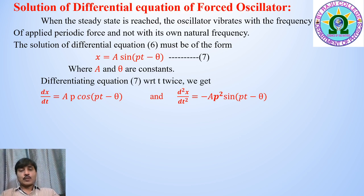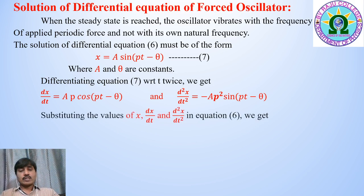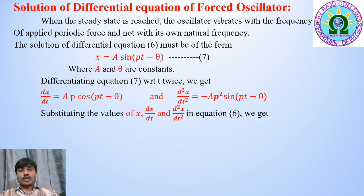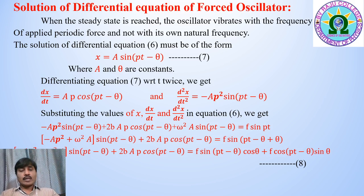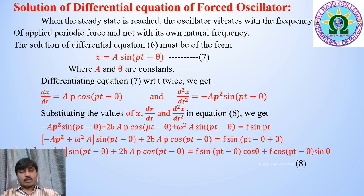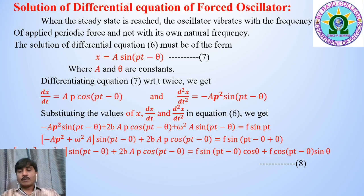Differentiating x = A sin(pt − θ) with respect to t twice, we get dx/dt = AP cos(pt − θ) and d²x/dt² = −AP² sin(pt − θ). Substituting these values of x, dx/dt, and d²x/dt² into the differential equation, we get: −AP² sin(pt − θ) + 2bAP cos(pt − θ) + ω²A sin(pt − θ) = f sin(pt). Rearranging: (ω² − AP²) sin(pt − θ) + 2bAP cos(pt − θ) = f sin(pt − θ + θ).